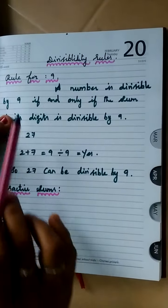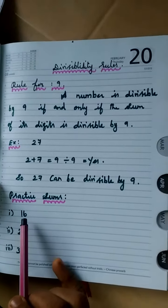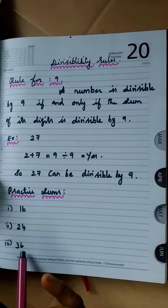Which is nothing but the rule for 3 and 9 become the same, children. The practice questions I have given here: first is 16, second is 24, third is 36.